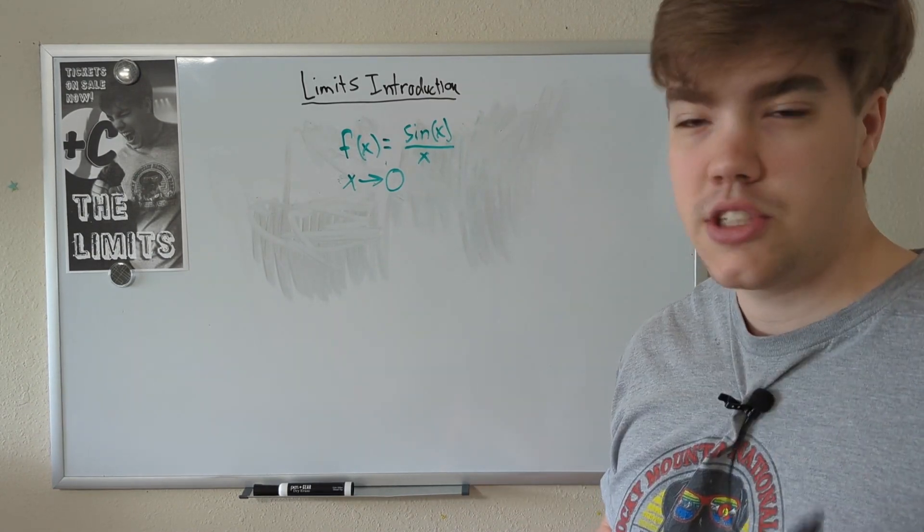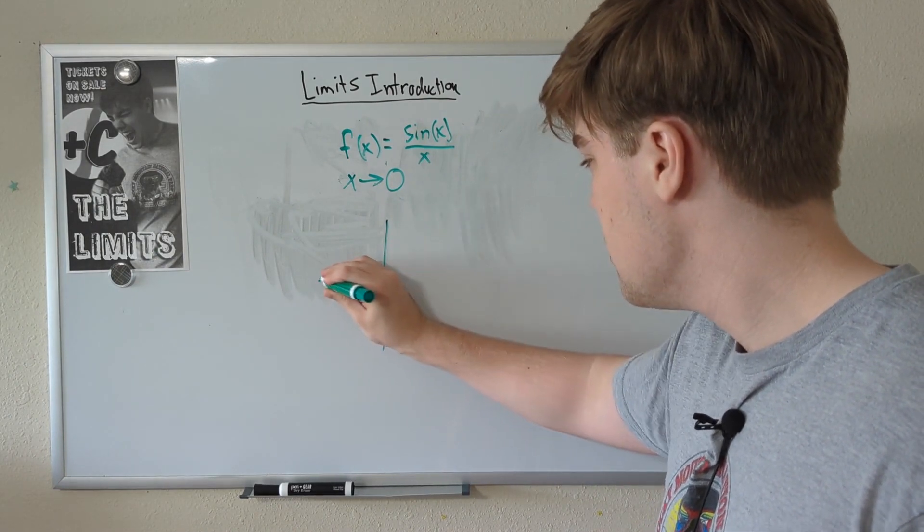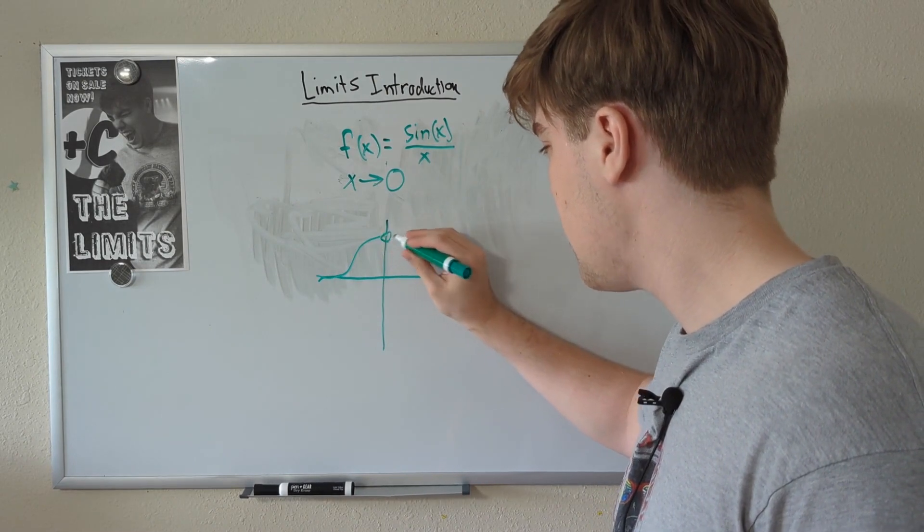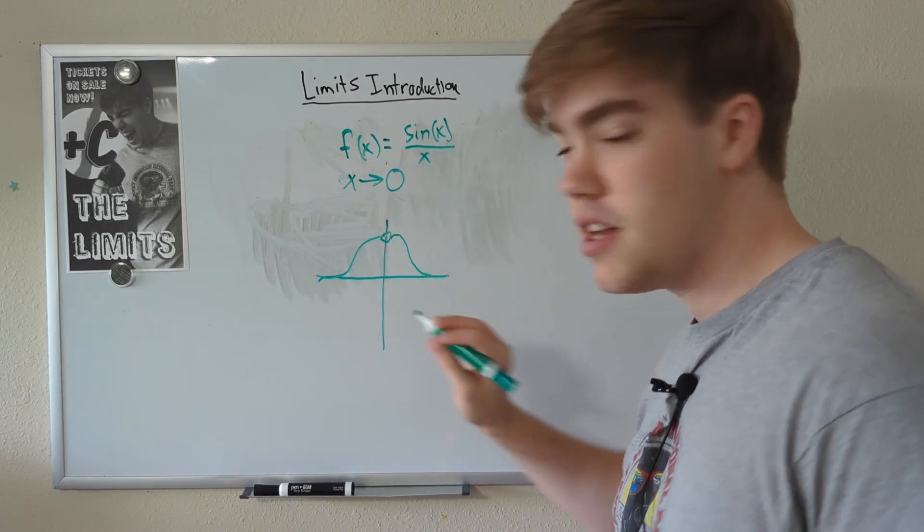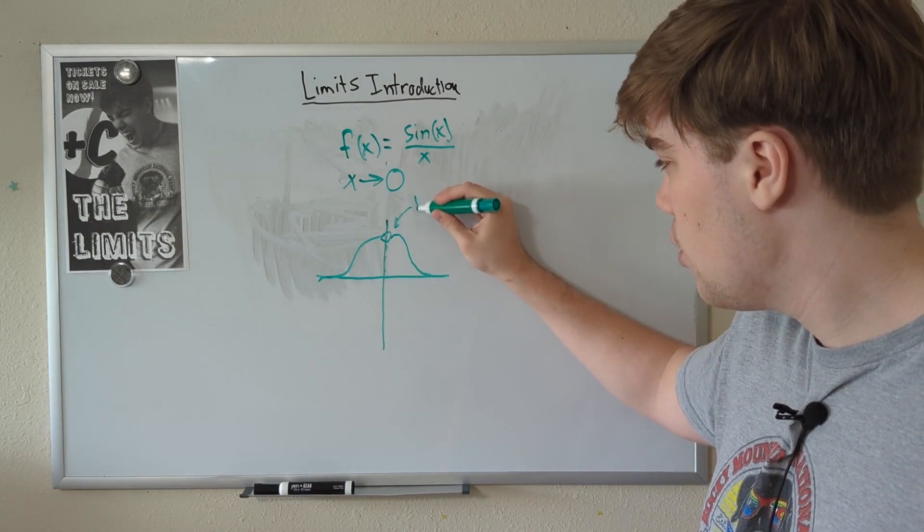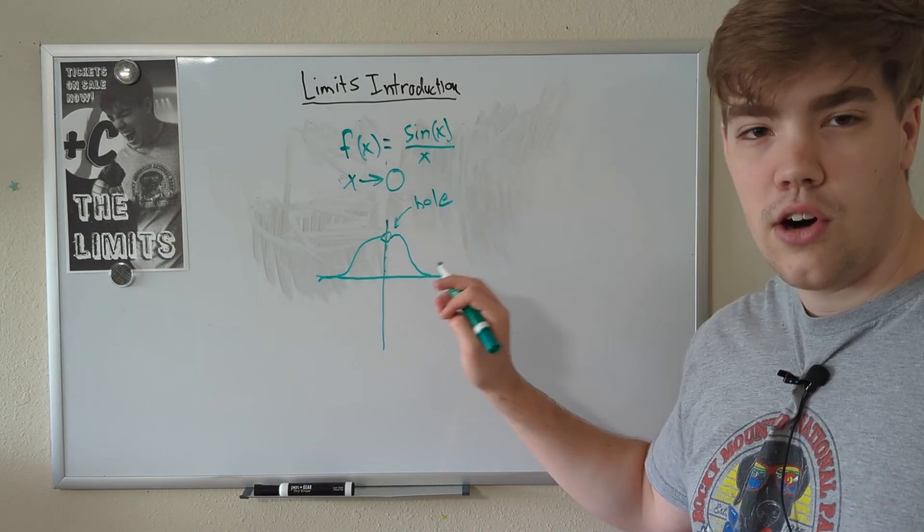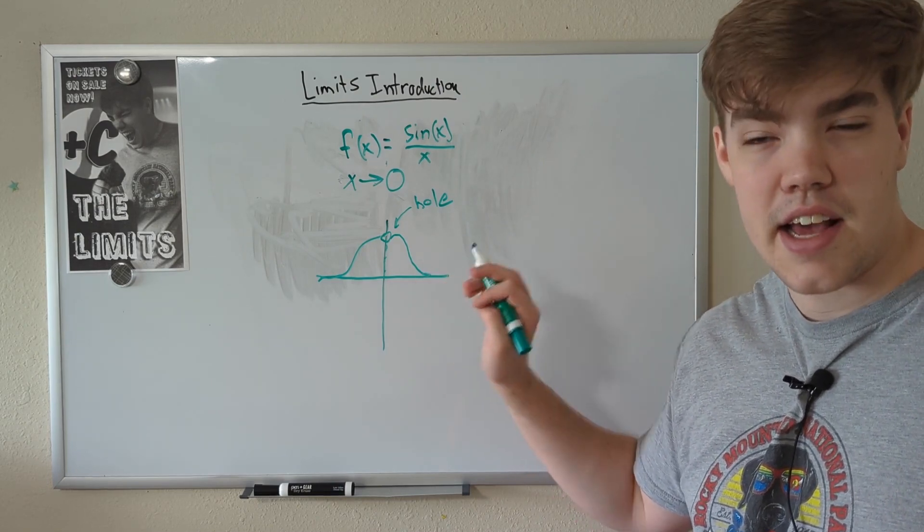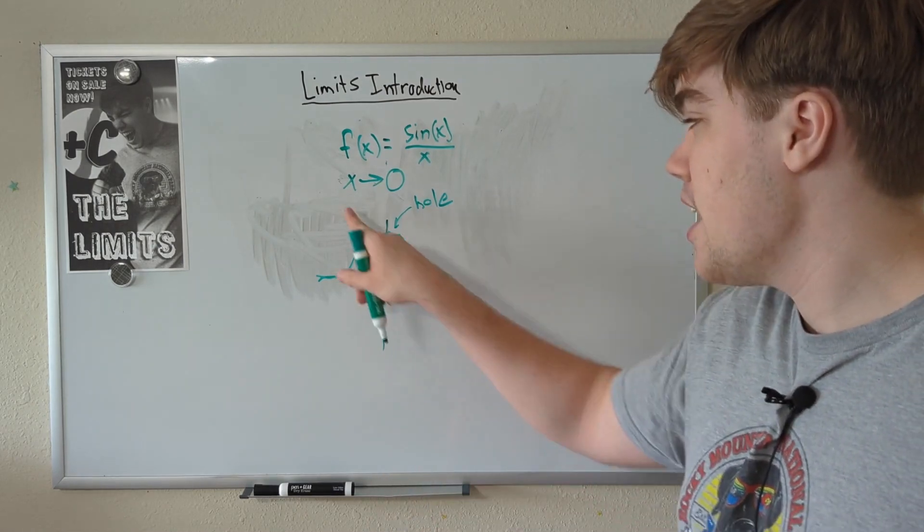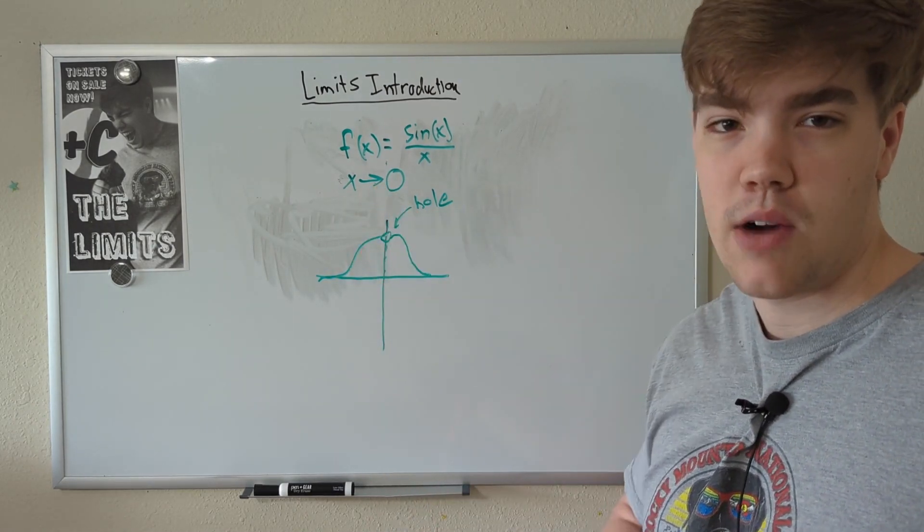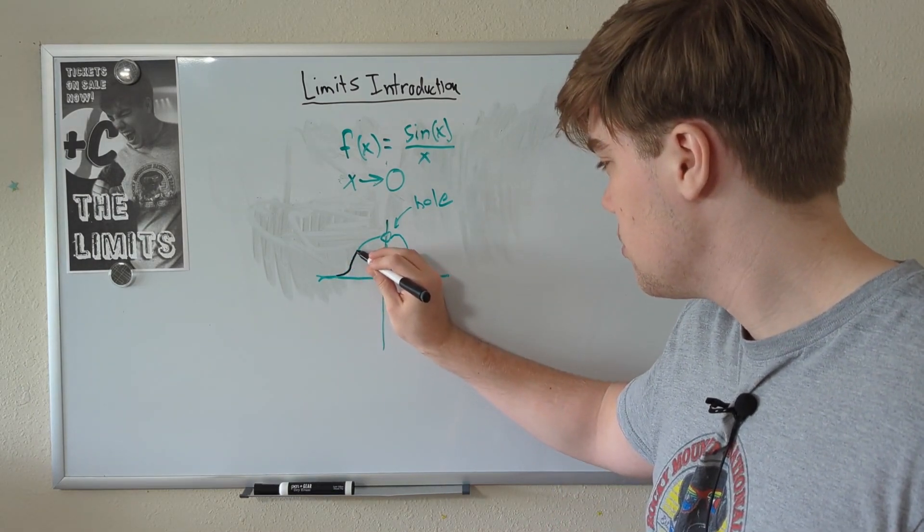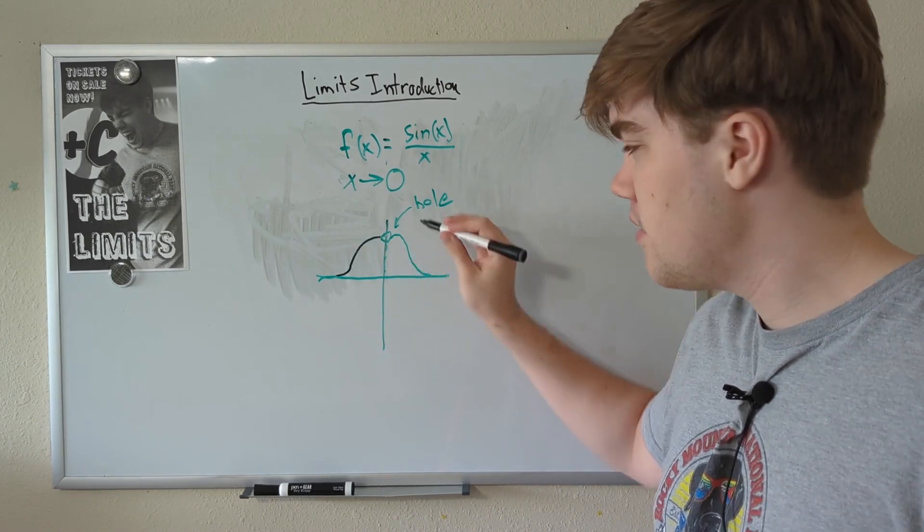Good question. Well, what we can do is draw the graph of this problem. The graph looks like this. So our sine function goes, whoop, and hits this spot here, and goes back down, and repeats like that forever. You may notice, here at x equals 0, we have a hole in our function. This hole means that we don't actually have something that exists at x equals 0. But you may remember a key word in something I said earlier. We don't care what happens when we actually reach x equals 0. We just care what happens as we approach x equals 0.